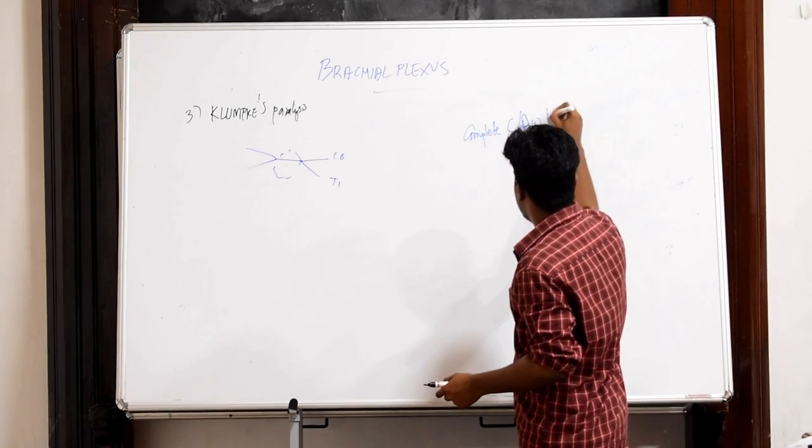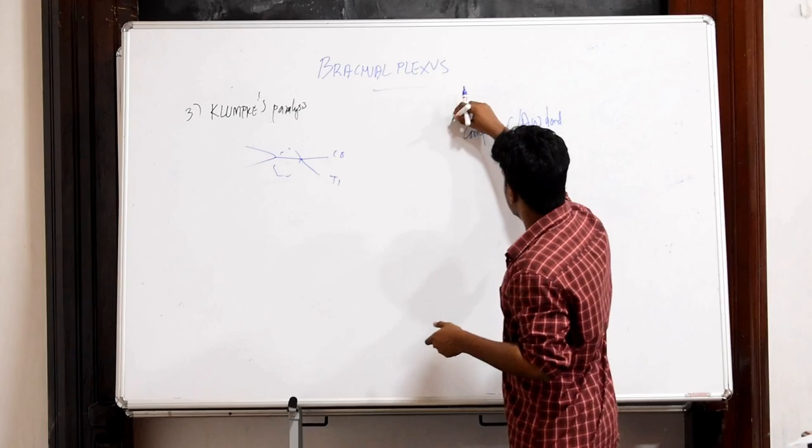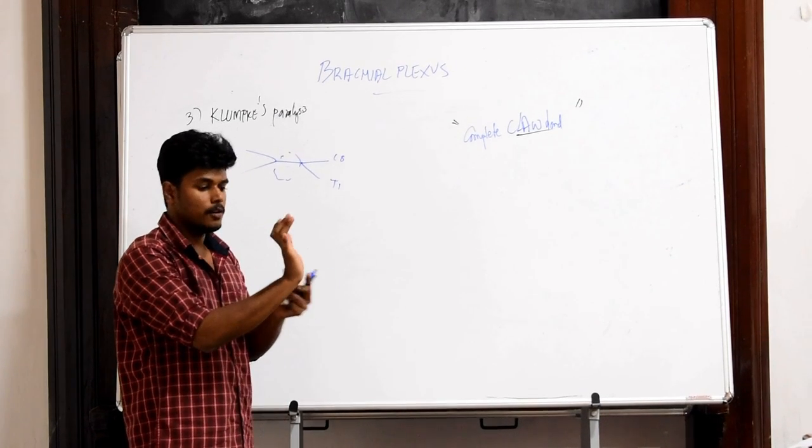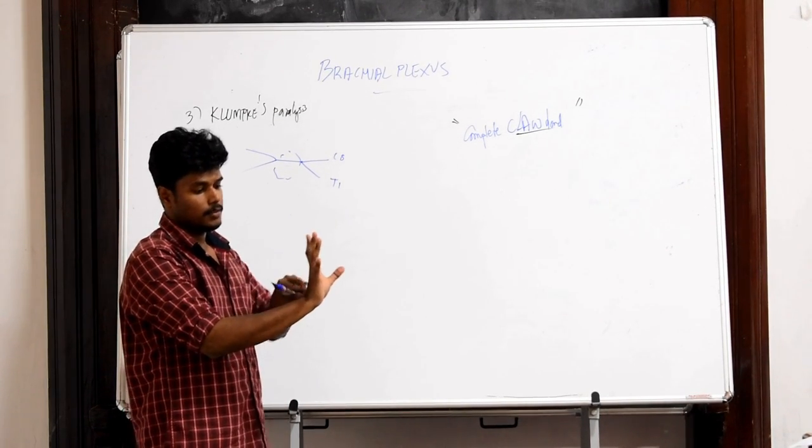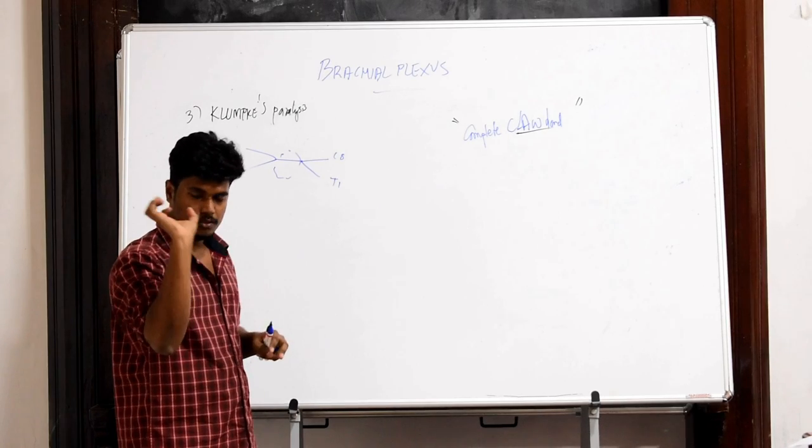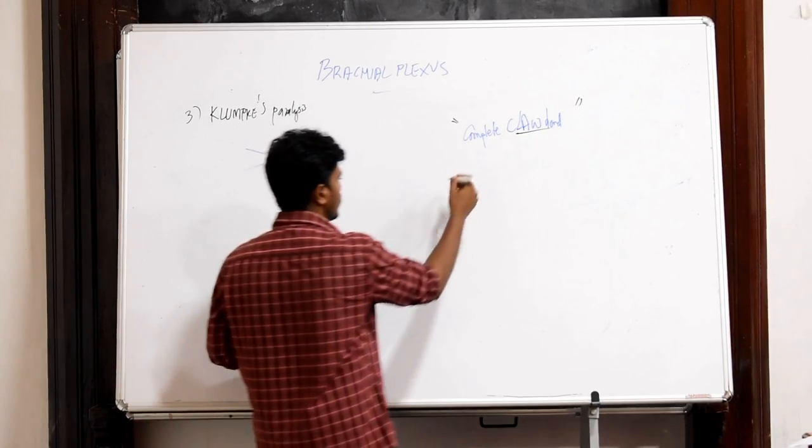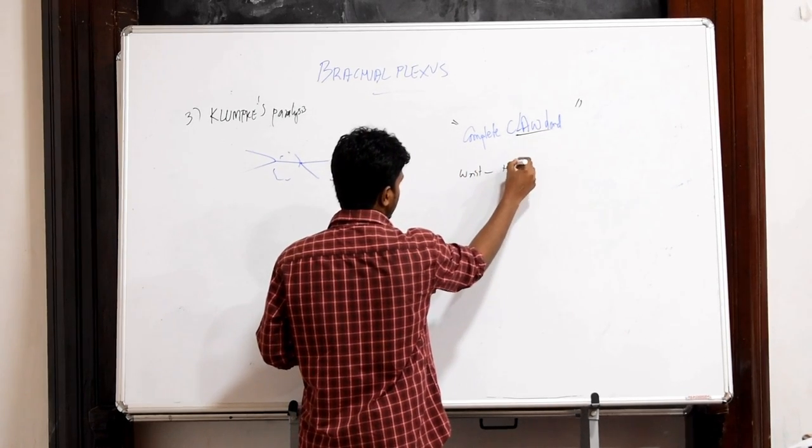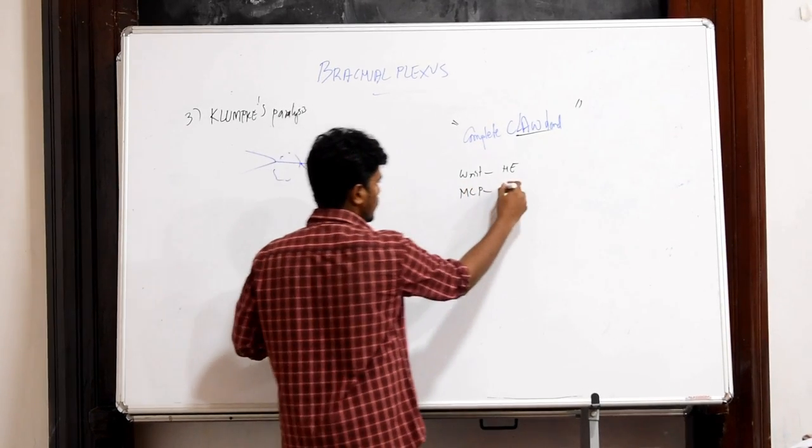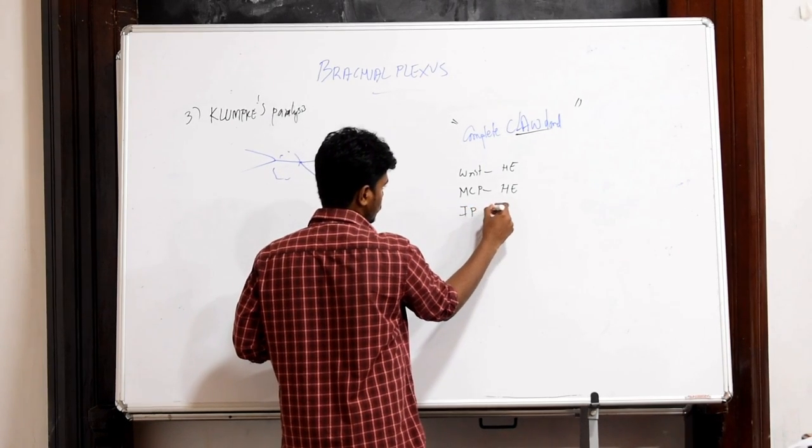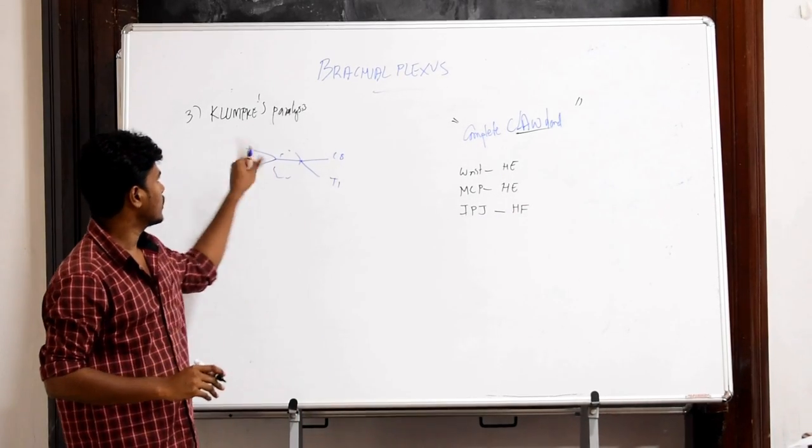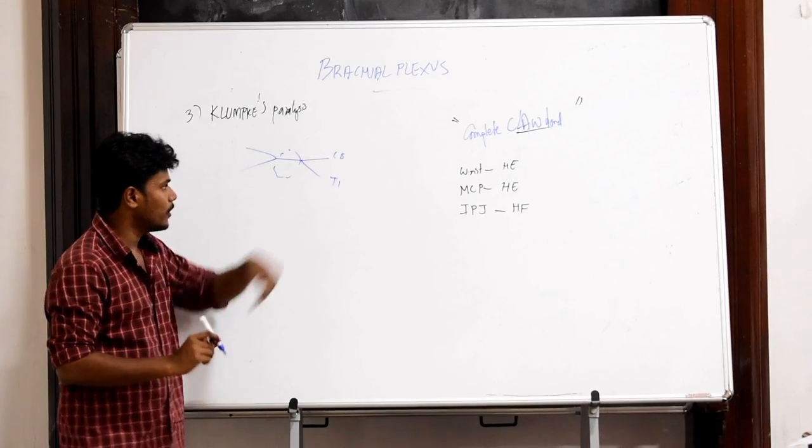Complete claw hand is represented by the extension of the wrist with the hyperextension at the metacarpophalangeal joints and flexion at interphalangeal joints. So, this is the typical representation of a complete claw hand where there is wrist hyperextension. Then the fingers will have at metacarpophalangeal joints hyperextension and at interphalangeal joints hyperflexion.